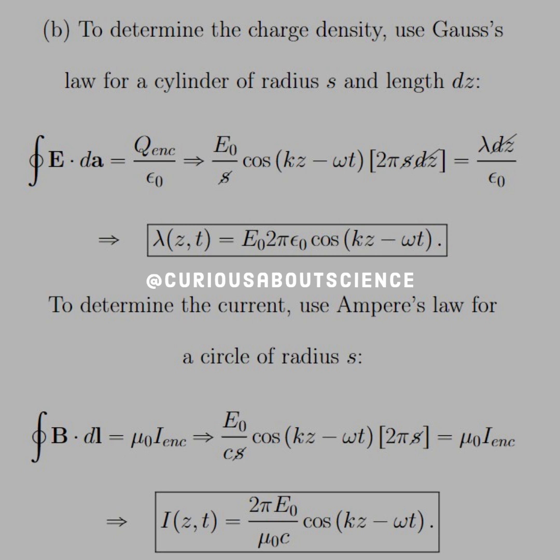And, we see that the S's cancel. And, we're left with mu naught I enclosed. So, I, once we solve for it, is equal to 2 pi E naught over mu naught C cosine KZ minus omega T.